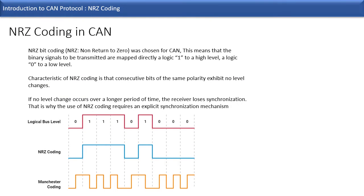In this chapter we will see how NRZ coding is used in CAN and how bit stuffing is used for CAN bit synchronization. NRZ means not return to zero, and NRZ coding is used in CAN.